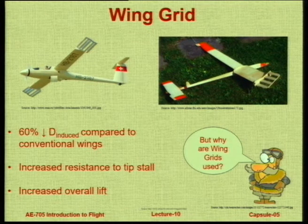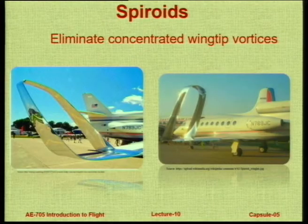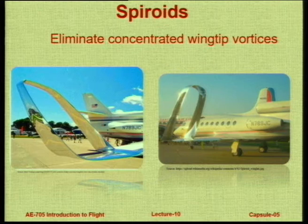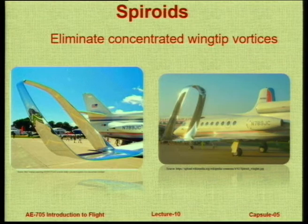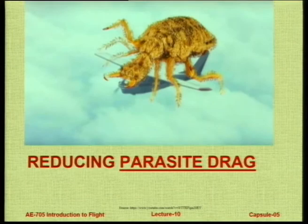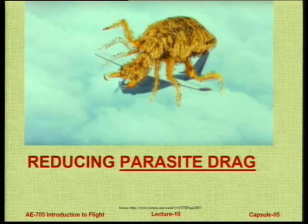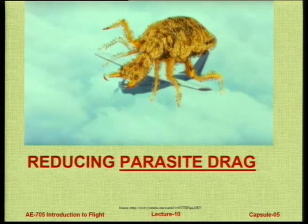Another interesting concept: instead of having a tip, create a spheroid — eliminating the separate tip by joining two wing tips together. This spheroid tip has been used on practical passenger aircraft. There are also people who say you can put a small turbine on the back of the wing tips that generates power using the curling air.